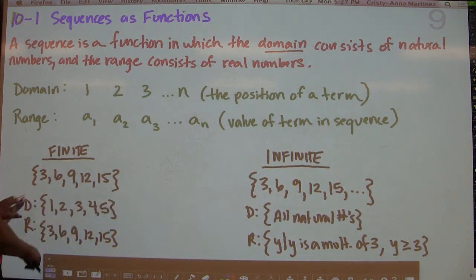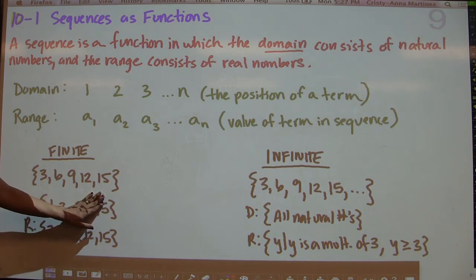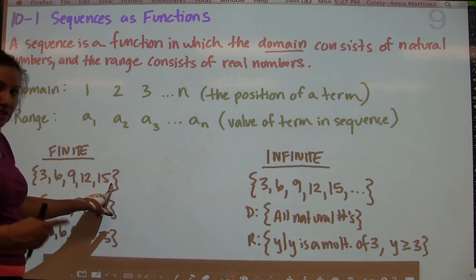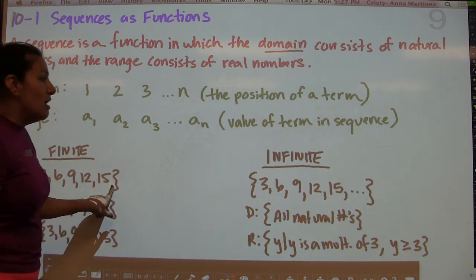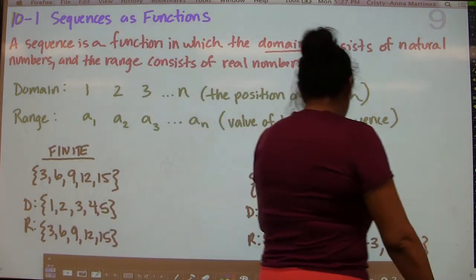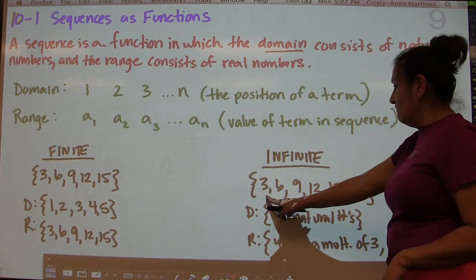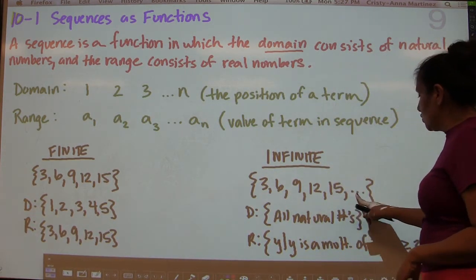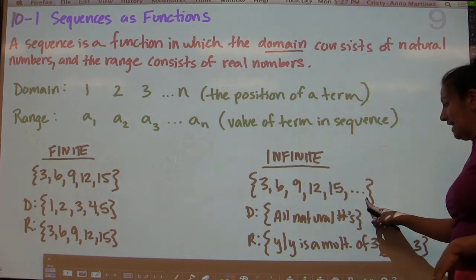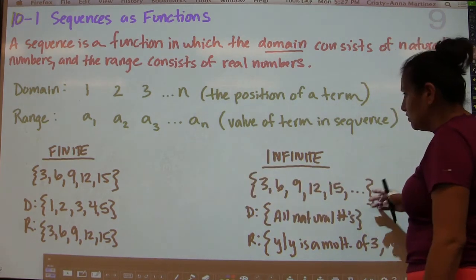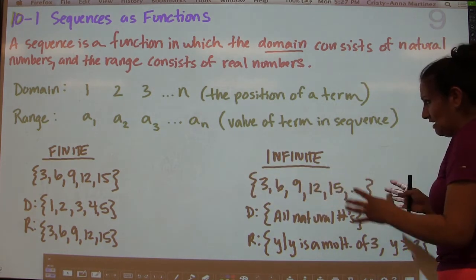This finite sequence has 3, 6, 9, 12, 15, and then it closes off with no dots to indicate that it's going to continue. By contrast, in the infinite situation, you have the same values, but now you have these three dots which indicate that this is going to go on forever. So that's the difference between finite and infinite.